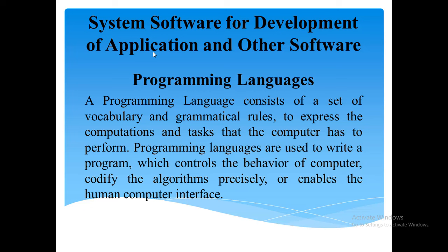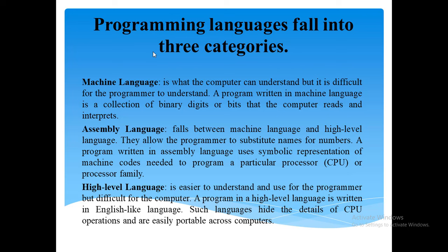Programming languages fall into three categories. The first is machine language, which is what the computer can understand but is difficult for the programmer to understand. A program written in machine language is a collection of binary digits or bits that the computer reads and interprets. It is a system of instruction and data executed directly by the computer's CPU, also referred to as machine code or object code, written using zeros and ones.